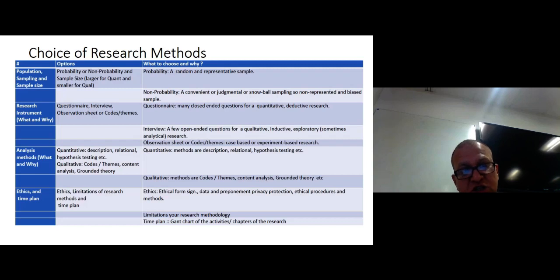And then the next stage is a research instrument, which means questionnaire, what questionnaire you are using, or are you using interview or observation sheet or codes? Questionnaire is mostly a closed-ended set of questions and it's for the quantitative research and it's a deductive, positivist-based approach.